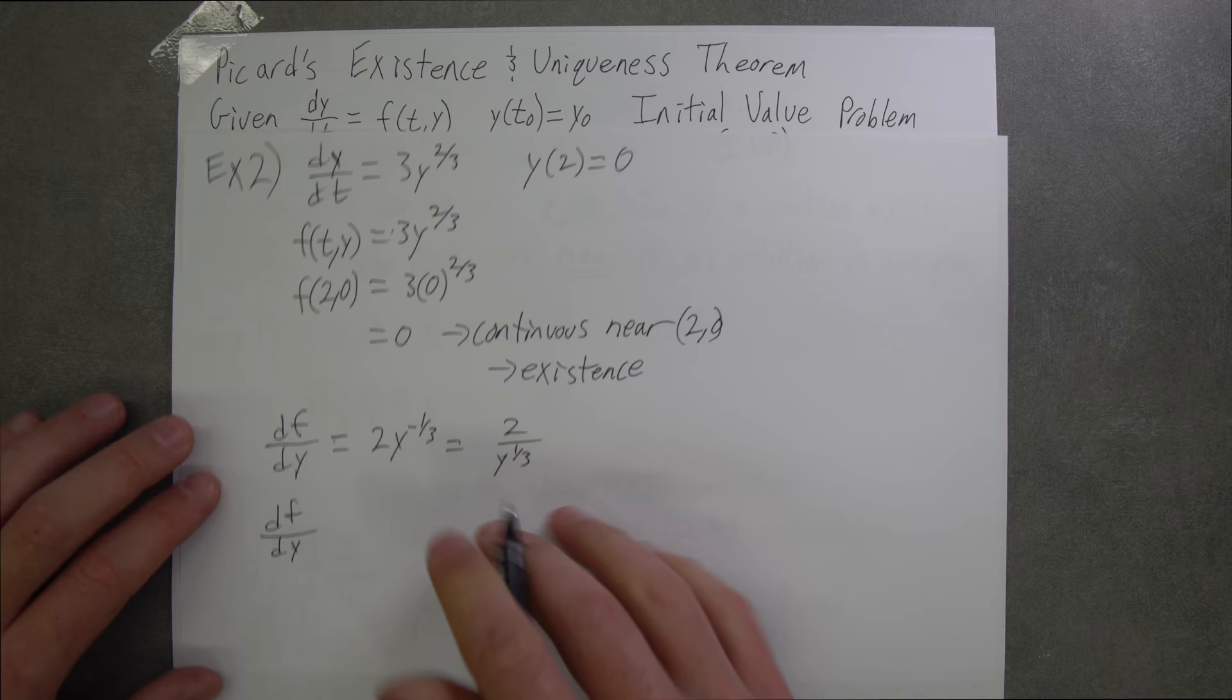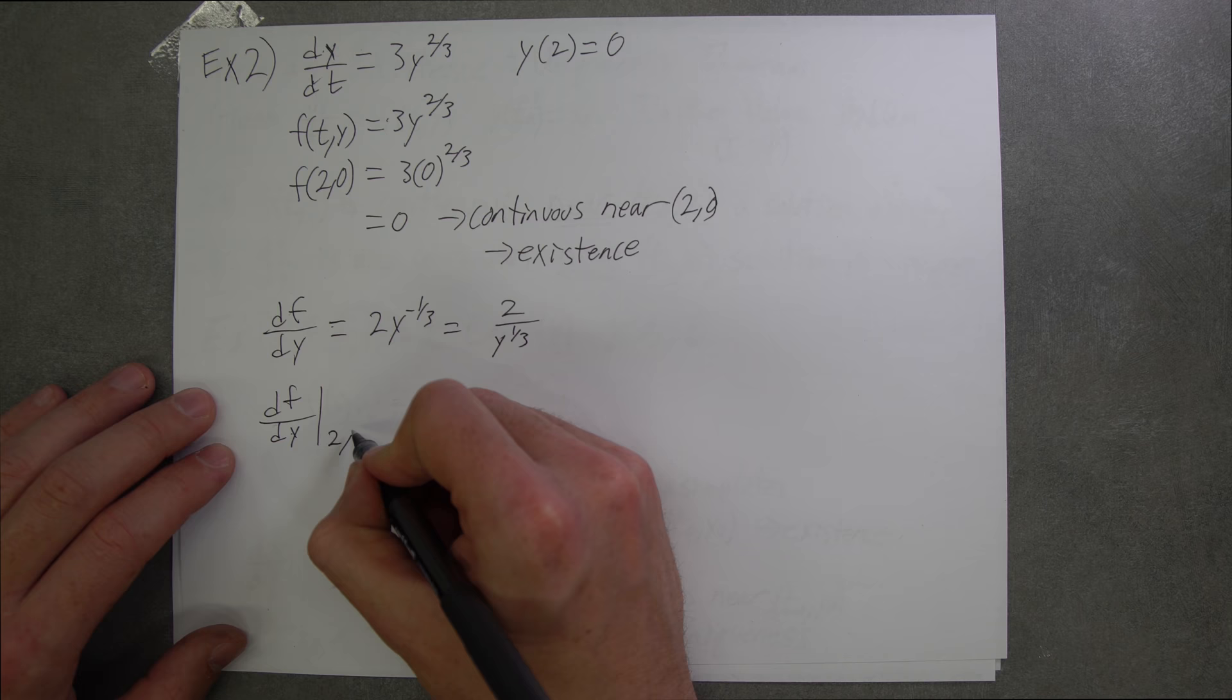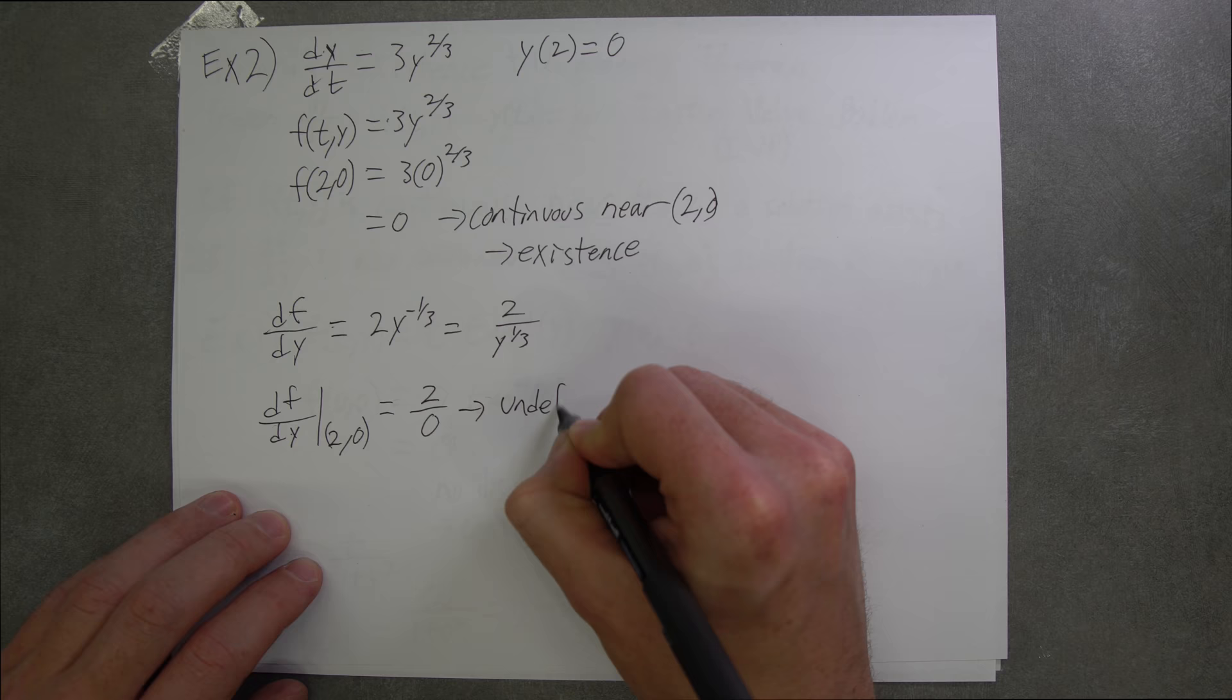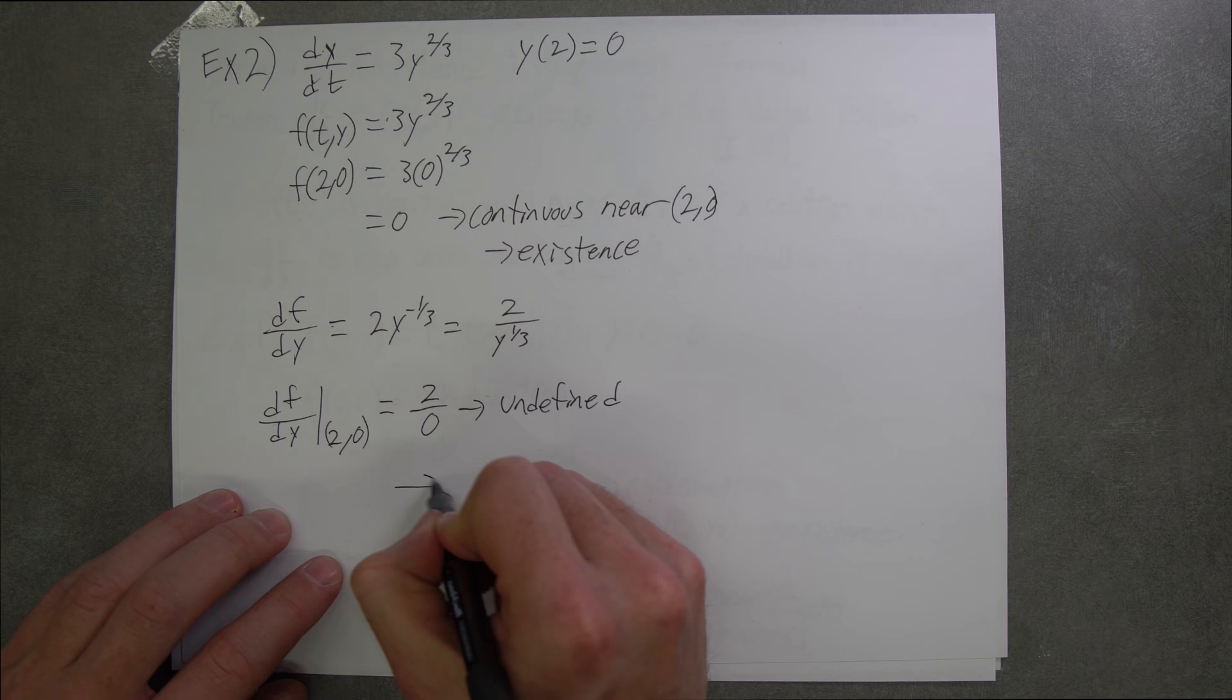If we evaluate this at our initial condition, or at our initial value (2,0), this is equal to 2 over 0, which is undefined.